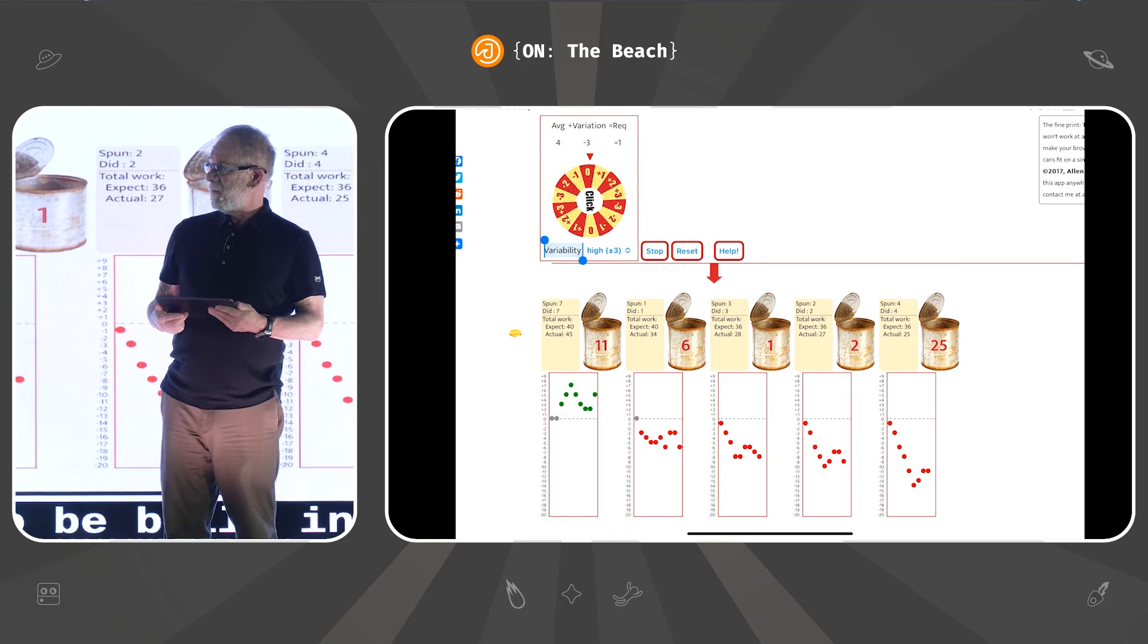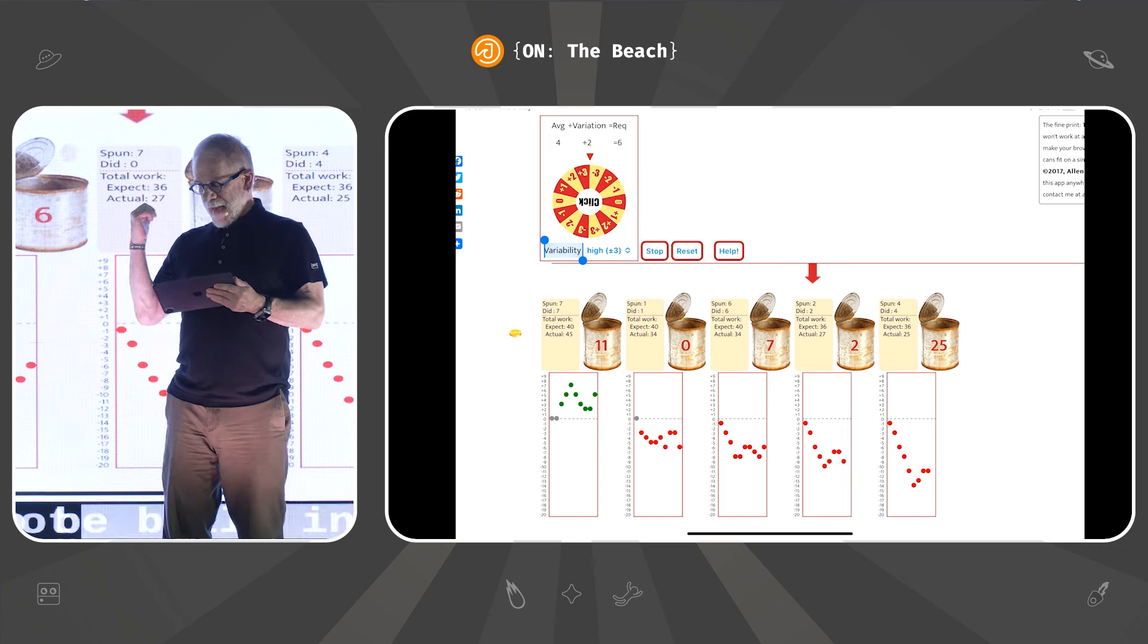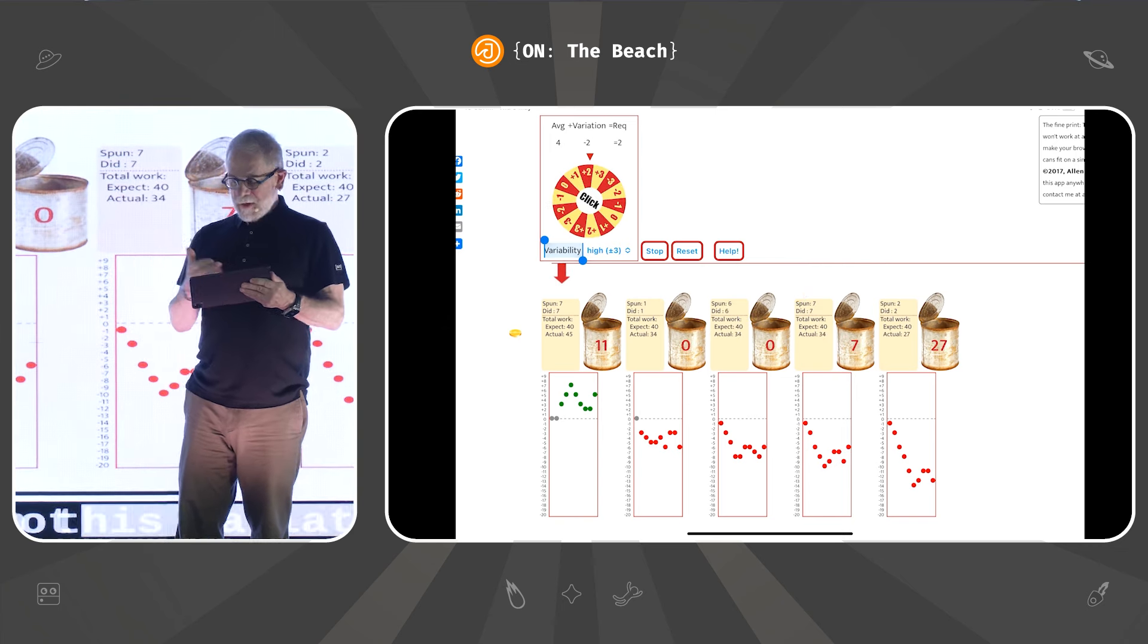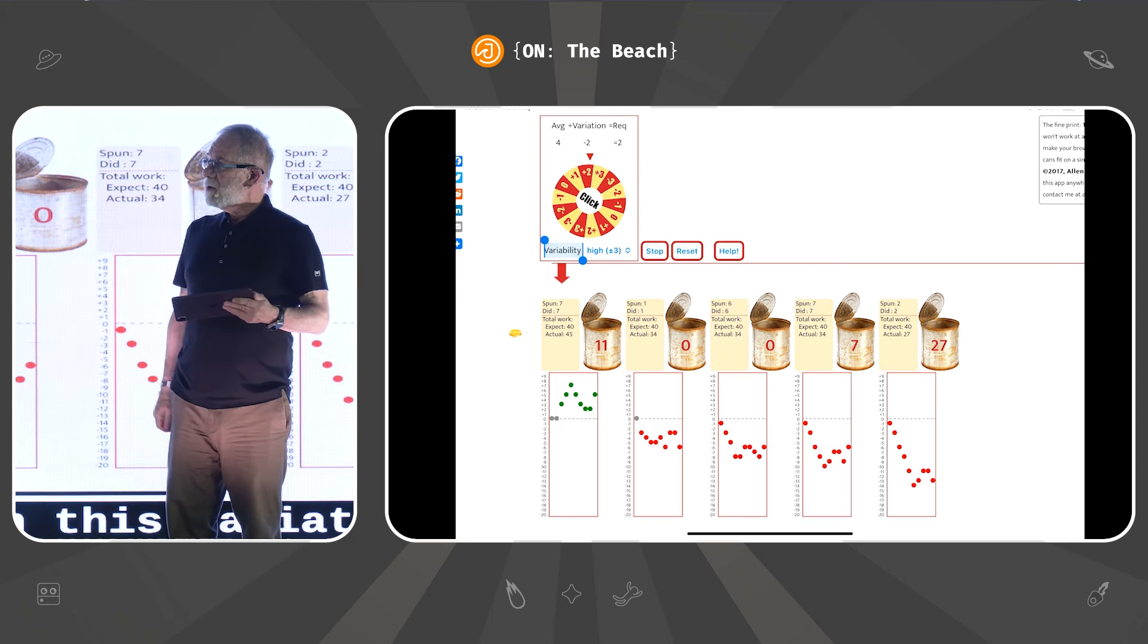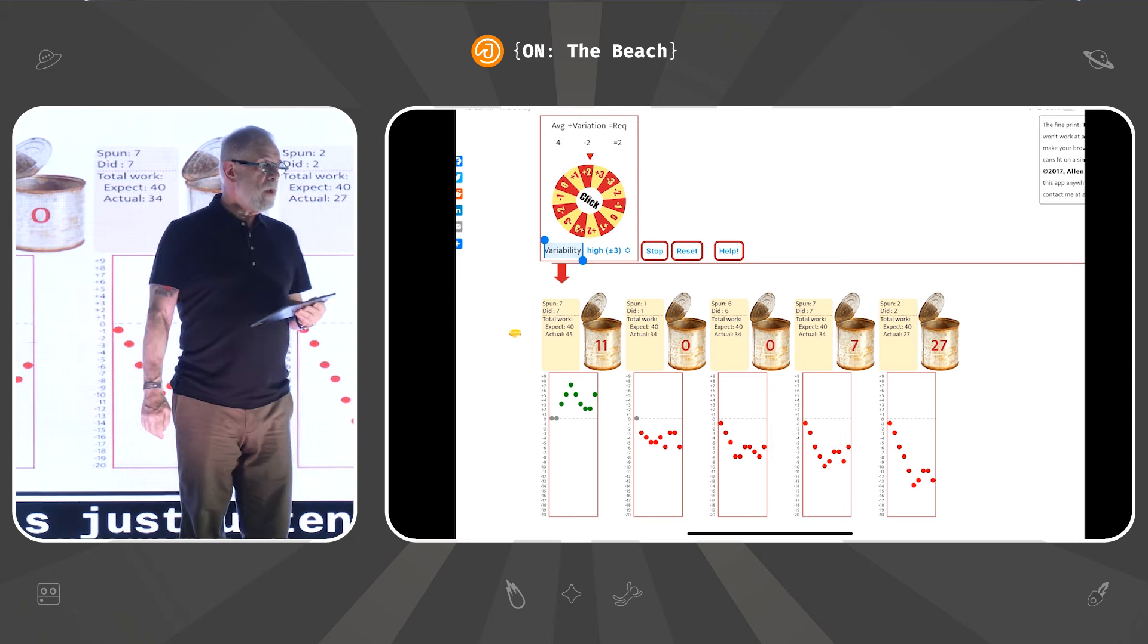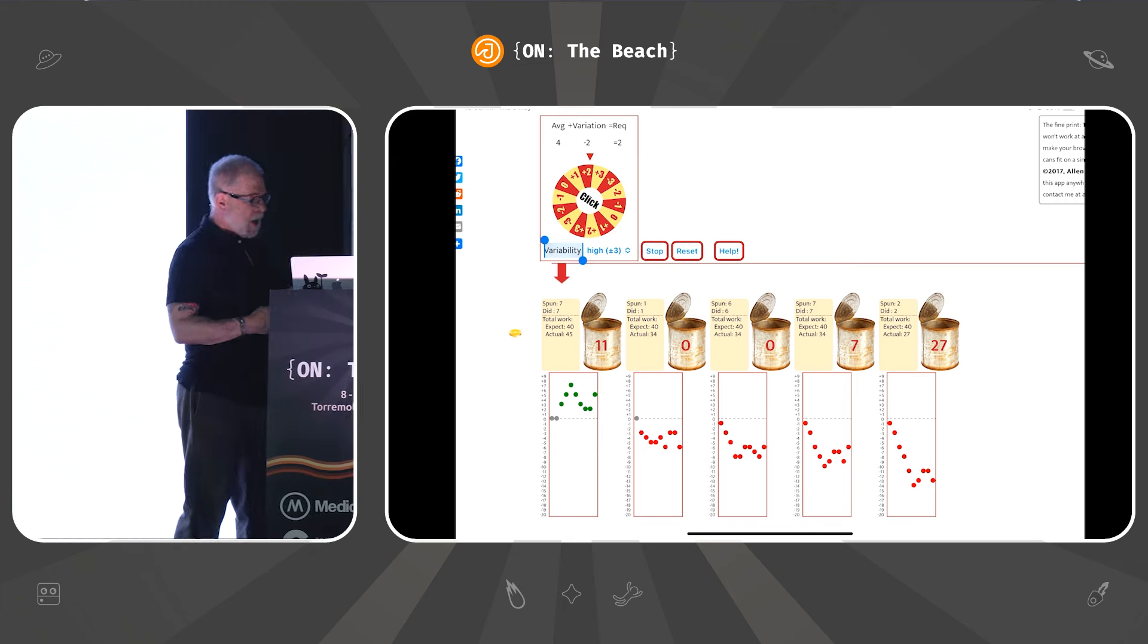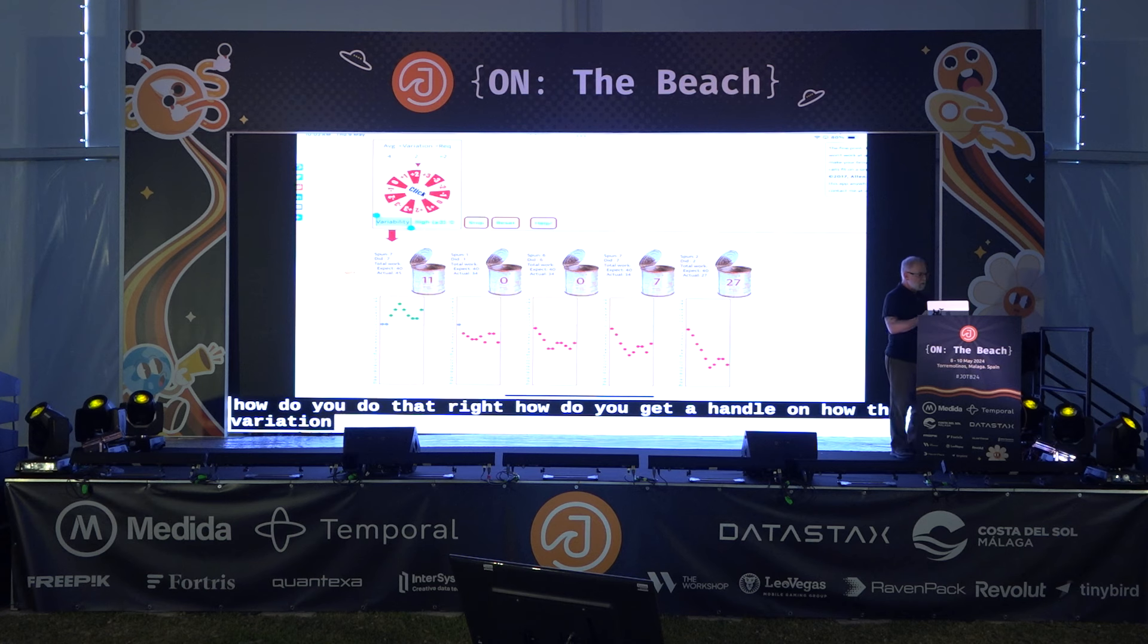That's something that needs to be built into the way our businesses plan, and it's not. But we want to get a handle on this variation problem. This situation is just untenable. So how do you get a handle on how the variation is fixed? And there are a couple ways to do it. One of which is the point of the talk is Slack.